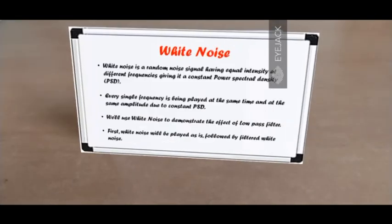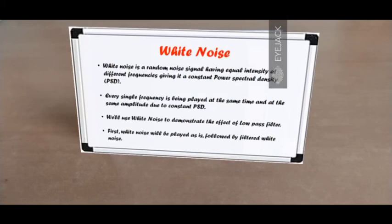For the purpose of demonstration, I'm going to play white noise in its purest form and then apply a first order and a fourth order filter with a cutoff frequency of 5000 Hz for you to perceive the difference. White noise is a random noise signal having equal intensity at all frequencies — it has a constant power spectral density, meaning every single frequency is being played at the same time and at the same amplitude. We'll use this noise to see the effect of a low-pass filter.